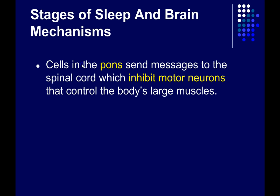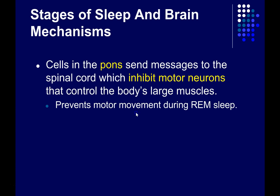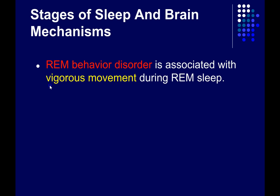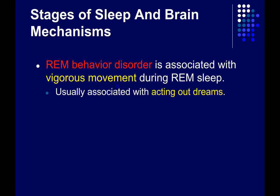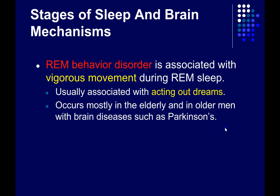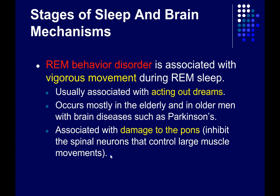In addition to triggering the onset of REM sleep and initiating PGO waves, cells in the pons send messages to the spinal cord that actively inhibit motor neurons — mainly those controlling the body's large postural muscles. As a result, you're effectively paralyzed during REM sleep. This is different in individuals with REM behavior disorder, which is associated with vigorous movement during REM sleep — usually acting out dreams, sometimes violently. This occurs mostly in older men, often those with neurodegenerative diseases like Parkinson's, possibly due to damage to pons neurons that inhibit spinal neurons controlling large postural movements.